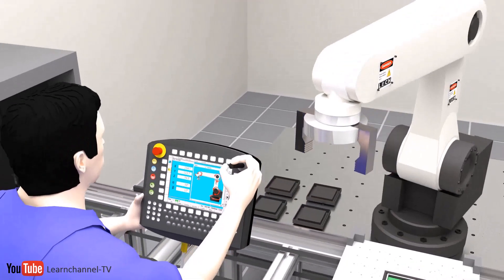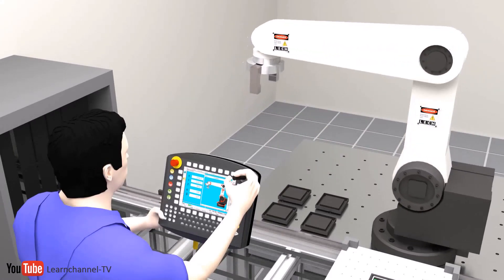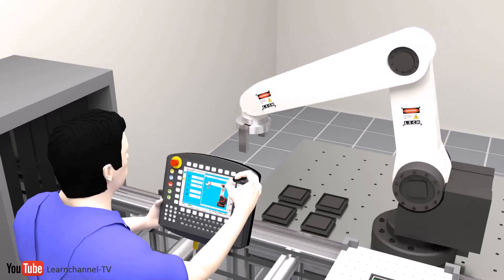When the operator gets the desired position and angle of the robot hand, the operator can save these coordinates with the position list by pressing the enter key.